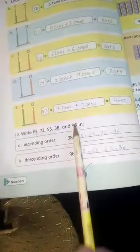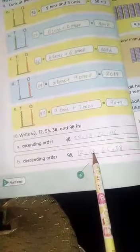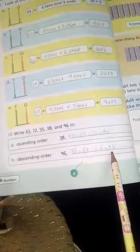Ab descending order mein sabse paas le joa bigger apna number likhna hai. 96, then 72, then 63, then 55 and then 38. Next, page number 7.